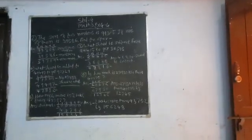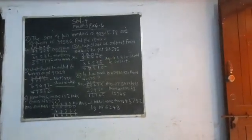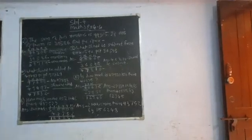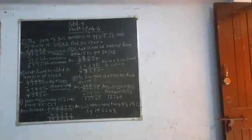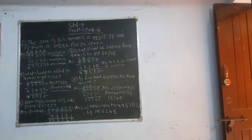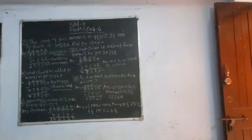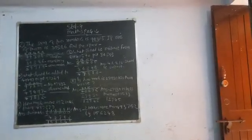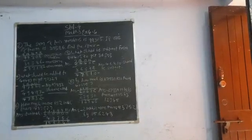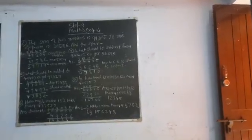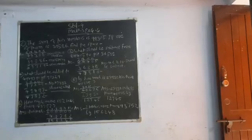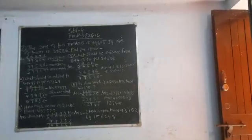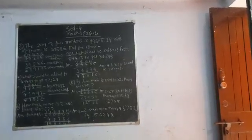We have taken 1 to 10, so it becomes 12. From 12, 9 goes. The next step, we have taken 1 to 10, so it becomes 12. From 12, 7 goes, leaving 5. We have taken 2, so 4 remains.